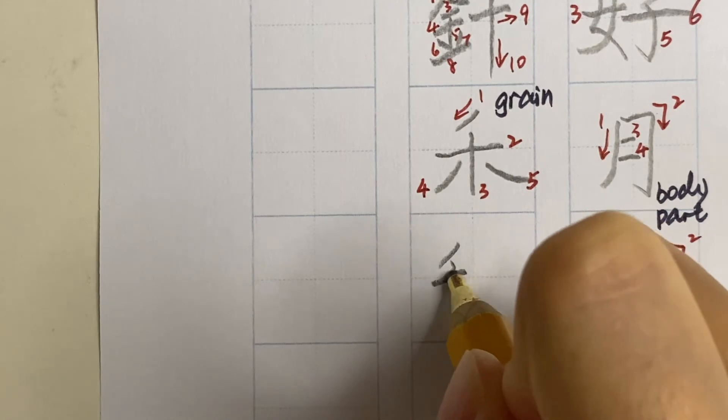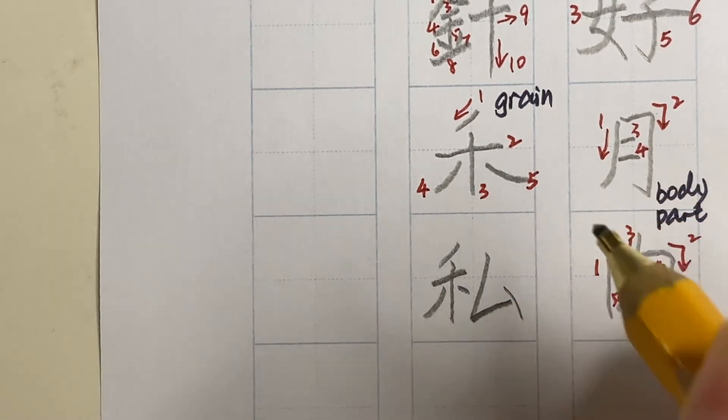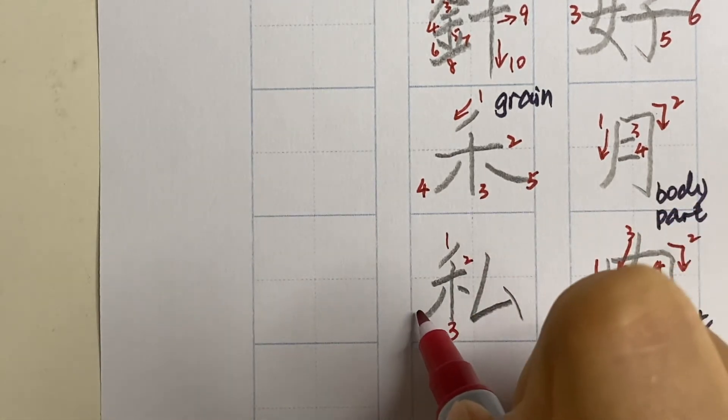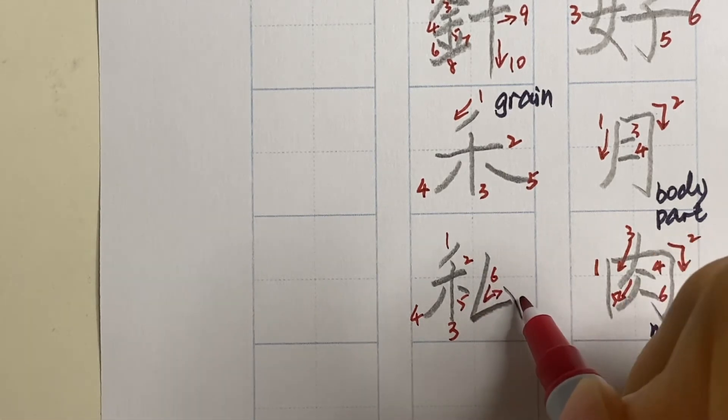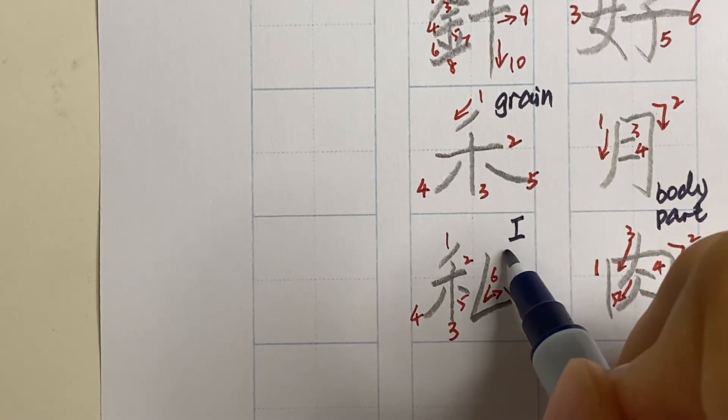When it's used as a radical, it can appear on the left, becomes slimmer, and a very familiar kanji to all of you is watashi. It's watashi. I or me. So everybody needs grain or rice to survive, and it also means private.